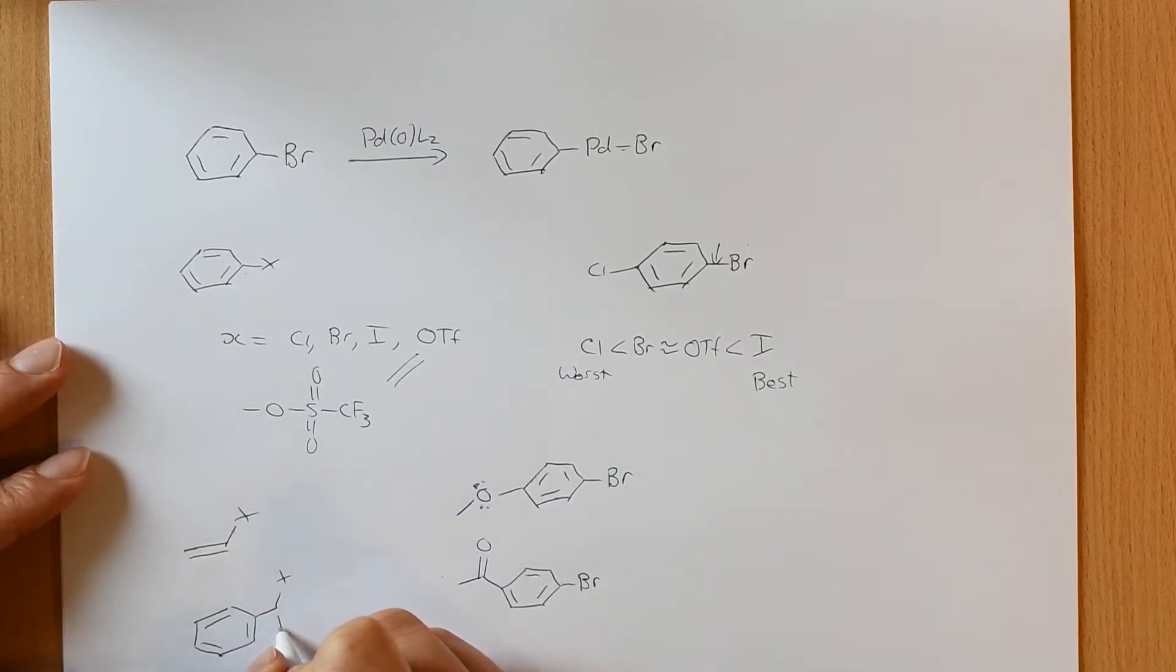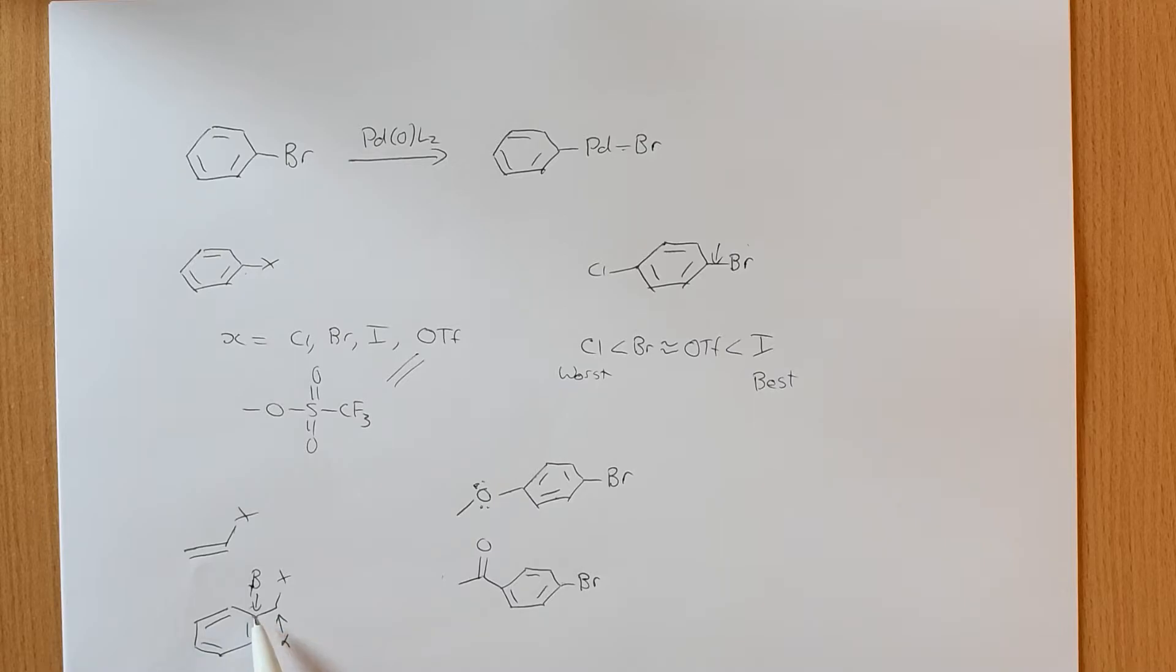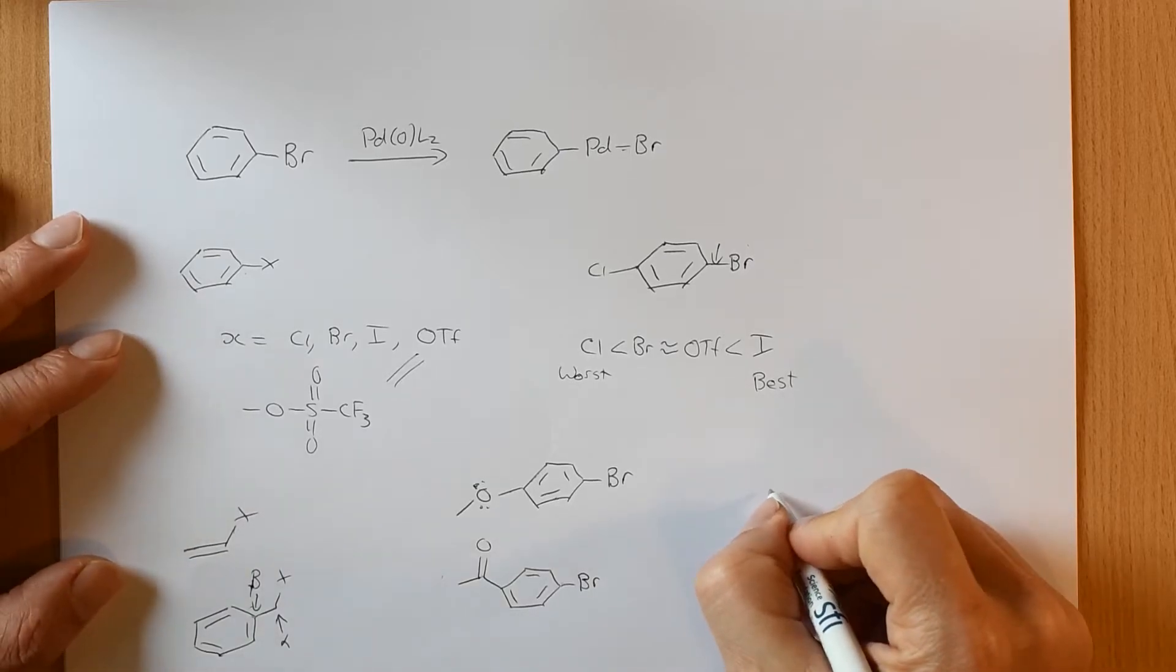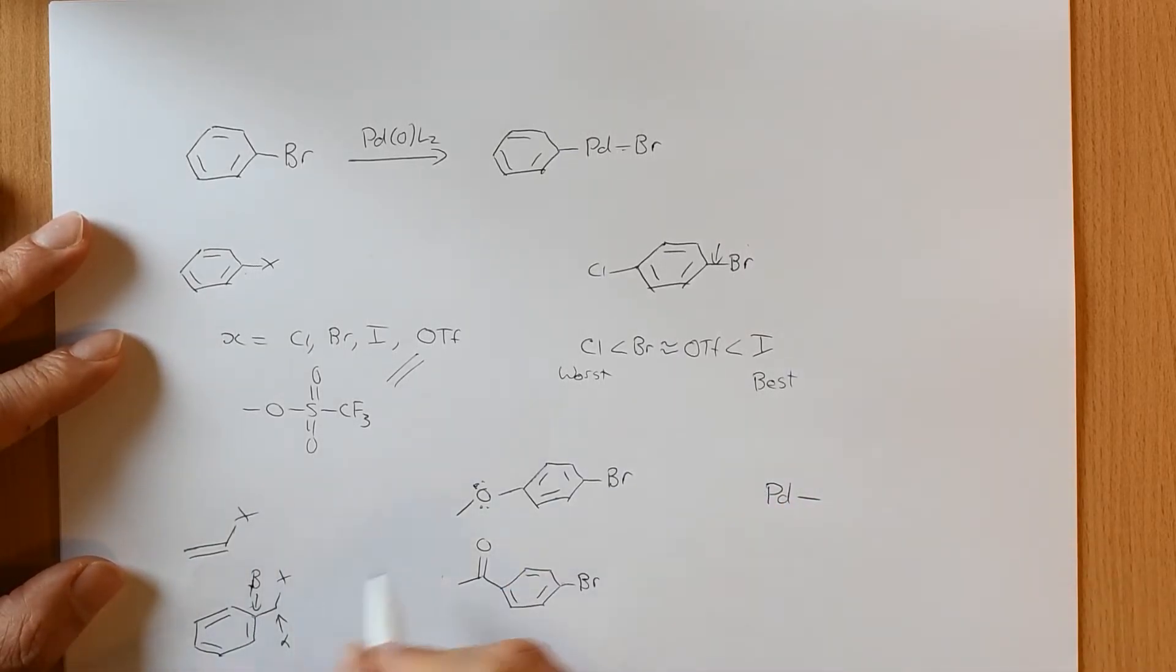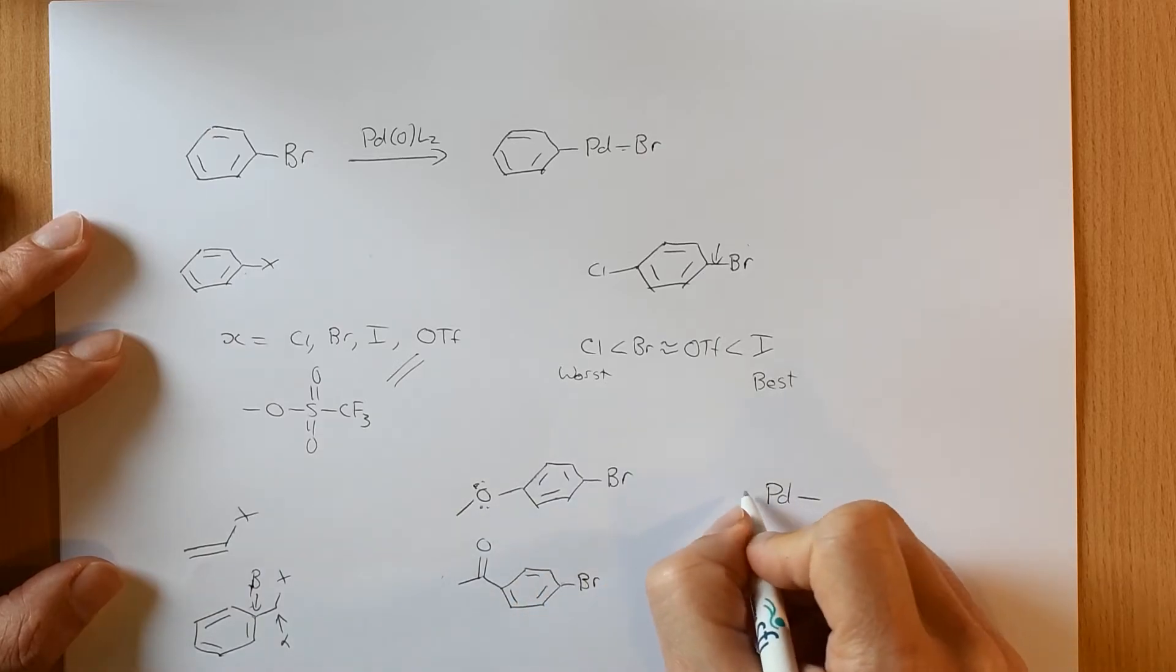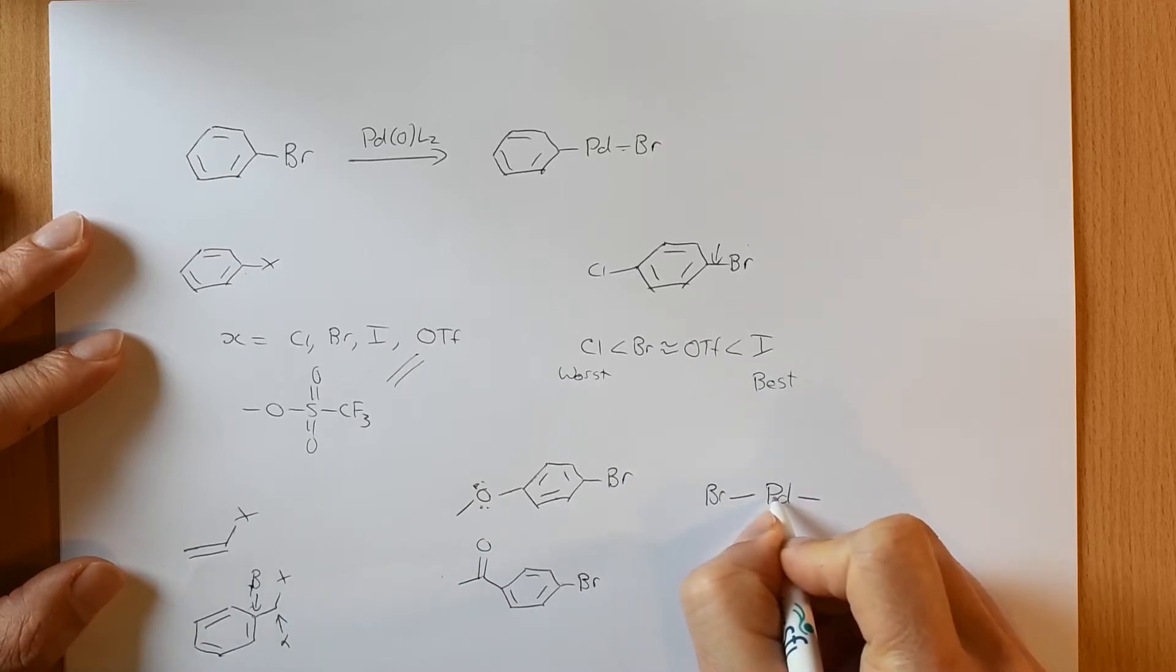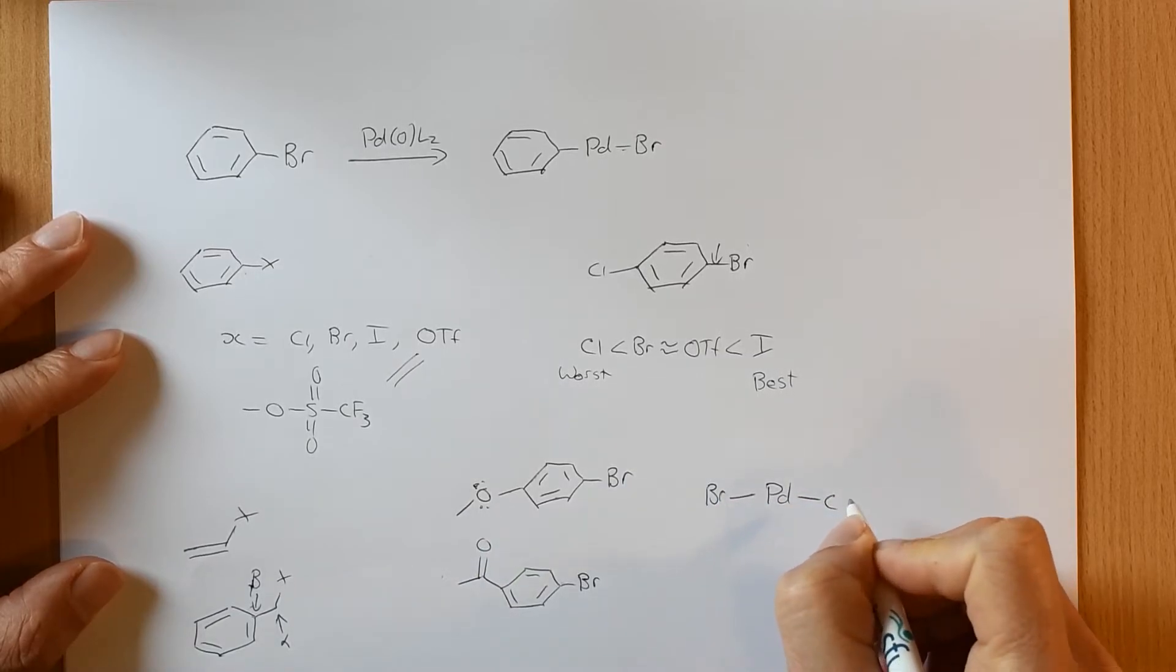So this here is our alpha carbon, and this here is our beta carbon. If there are no hydrogens attached to that beta carbon, then it will often work as a coupling partner. Why is that? Well, if we think about our coupling partner, if we think about this complex here that we would usually form, we'd have our palladium-bromine and our palladium-carbon bond. And if there is a hydrogen on an adjacent carbon, then it is possible that this will eliminate out.